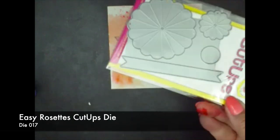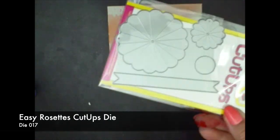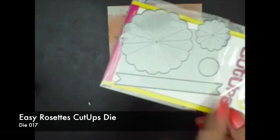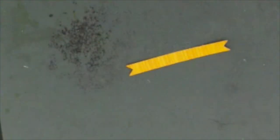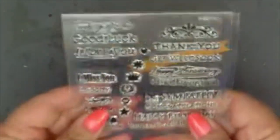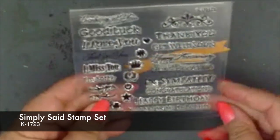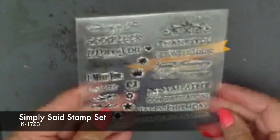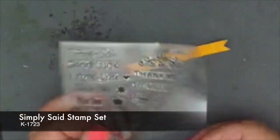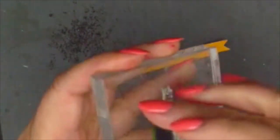So let's add a sentiment. I'm using the banner from the Easy Rosette's cut-up die and cutting a piece of orange paper. Next, the sentiment. The sentiments from our Simply Said Sentiments stamp set. Say that five times fast. And the sentiments fit perfectly on the banner. I think I'll use the just because.